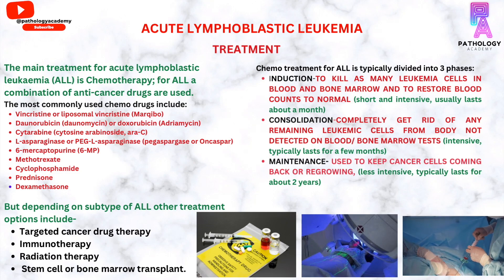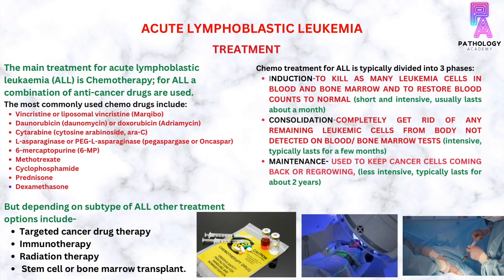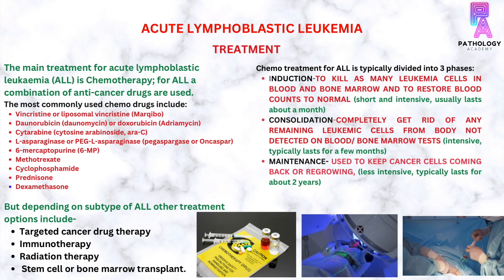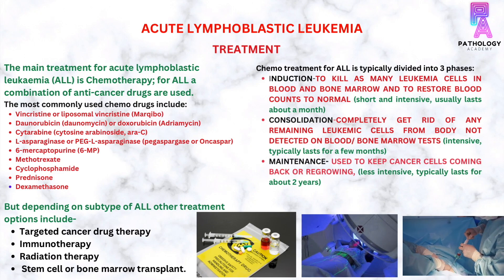The induction phase has a goal to kill as many leukemia cells as possible in the blood and bone marrow and to restore blood counts to normal. It is a short and intensive phase that usually lasts about one month. The consolidation phase goal is to completely get rid of any remaining leukemic cells from the body which were not detected in the blood or bone marrow test, and this typically lasts for a few months.